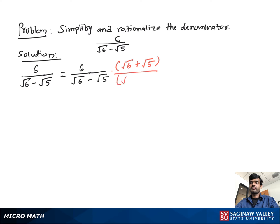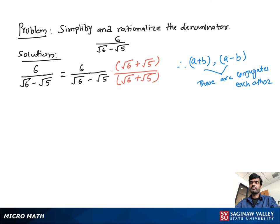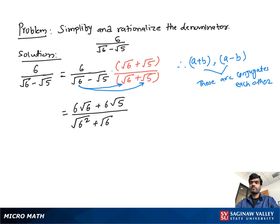Since the denominator is square root 6 minus square root 5, the conjugate is square root 6 plus square root 5. We multiply both numerator and denominator by square root 6 plus square root 5. This gives us 6 times square root 6 plus 6 times square root 5 in the numerator, and in the denominator: square root 6 squared, plus and minus square root 6 times square root 5 terms, minus square root 5 squared.